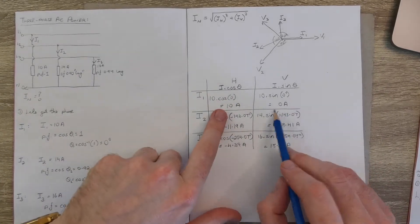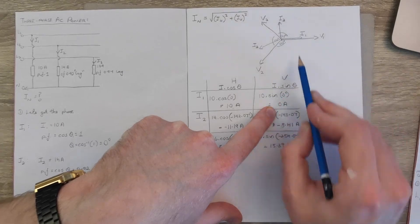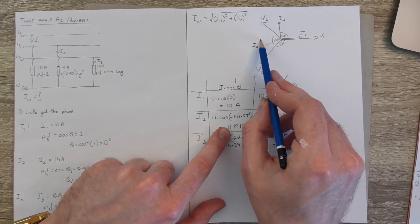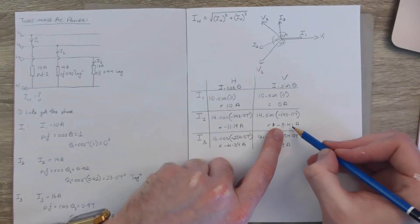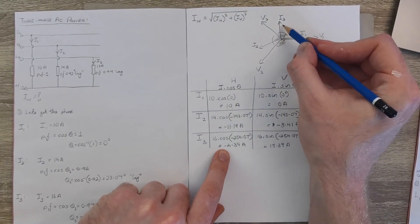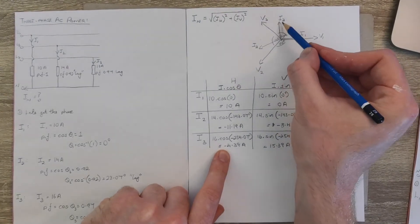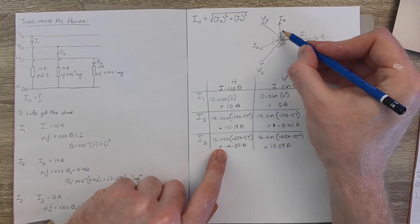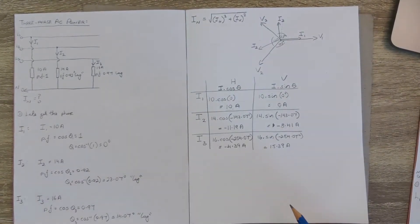So if we just look at these very quickly, we see that for i1 it's all in the horizontal so it's 10 and there's no vertical part so 0. i2 has a negative horizontal part and a negative vertical component. i3 has a negative horizontal component and a positive vertical component.